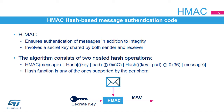The hash-based message authentication code, or HMAC, is used to authenticate messages and verify their integrity. The HMAC function consists of two nested hash functions with a secret key that is shared by the sender and the receiver. The hash function involved in the HMAC computation can be any one supported by the peripheral: MD5, SHA-1, or SHA-2.